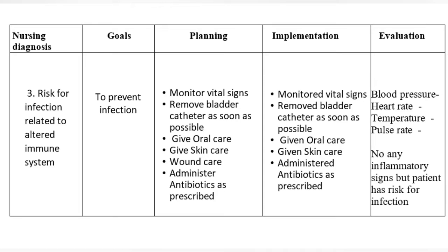Nursing Diagnosis 3: Risk for infection related to altered immune system. Goal: To prevent infection. Planning and Implementation: Monitor vital signs, remove bladder catheter as soon as possible, give oral care, give skin care, wound care, administer antibiotics as prescribed. Evaluation: Blood pressure, heart rate, temperature, pulse rate — monitor for any inflammatory signs; patient has risk for infection.